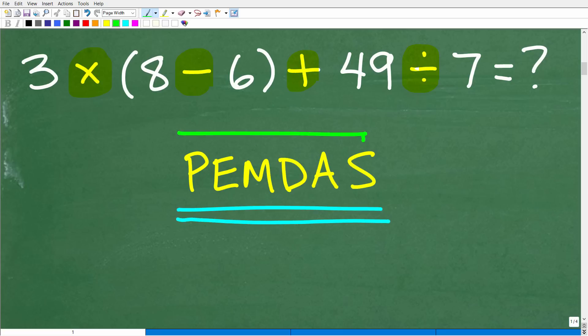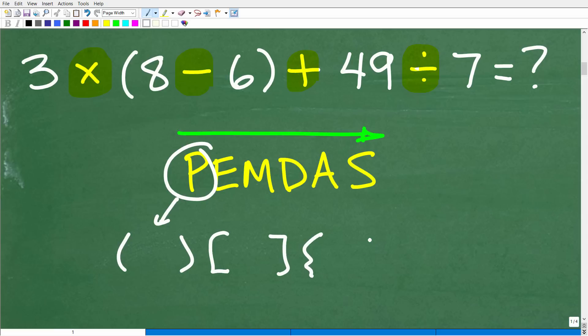All right, so this is an acronym. Obviously, these letters stand for something. So let's go ahead and get into this right now. Okay, so again, this is a checklist. You're going to go from left to right, and you're going to start here with P. So P stands for parentheses, okay? But really, that means grouping symbols. So if you have brackets or even these type of squiggly brackets, that's where you're going to start first.